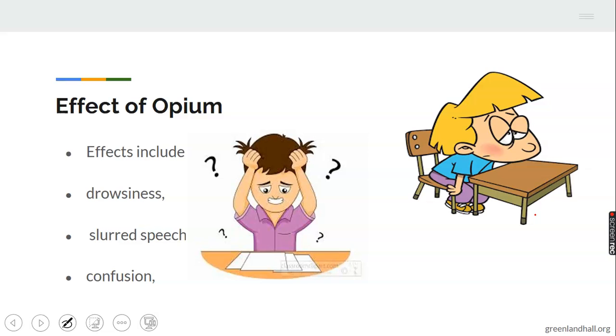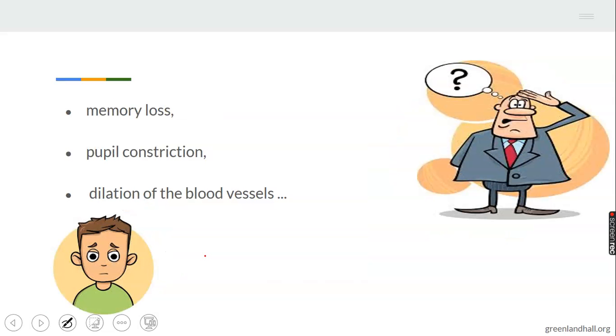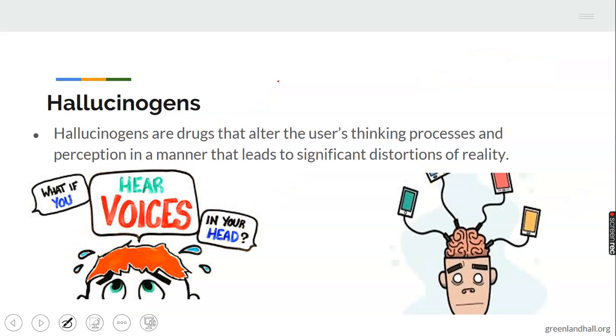Effects of opium: it includes drowsiness, slowed speech, you don't even know what you're saying, your speech is not clear. Confusion also is there, it's going to have memory loss, pupil constriction, dilation of the blood vessel. You don't want to have memory loss, do you? I don't want that for you either. I want your memory to be on top notch, on top jet.